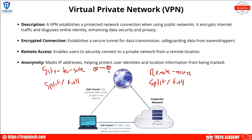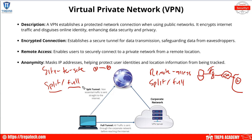Site-to-site can be router to firewall, firewall to firewall, HQ to spoke. With remote access, that's our roaming user connecting off any internet connection through an ISP, back to our enterprise environment. With split tunnel, any traffic not destined for enterprise resources goes straight to the internet, while enterprise traffic goes out the VPN. With a full tunnel, all traffic — regardless of destination — always goes through that corporate network and to the VPN endpoint.